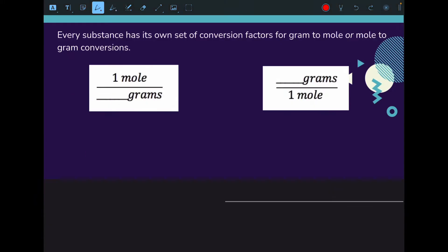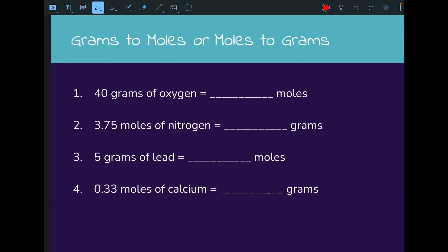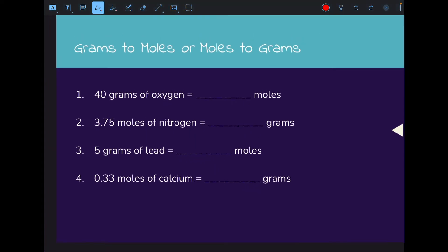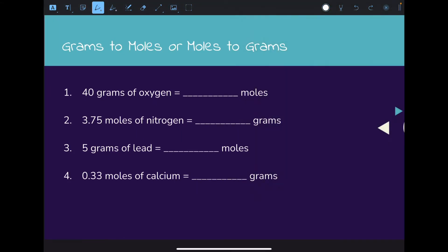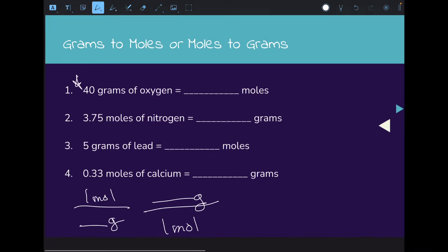Let me show you some examples of how this works. If we're converting grams to moles or moles to grams, remember that we're going to need one of two different conversion factors. You're either going to need one mole for every blank grams, or blank grams for every one mole, and you'll fill that blank in with the number from the periodic table.